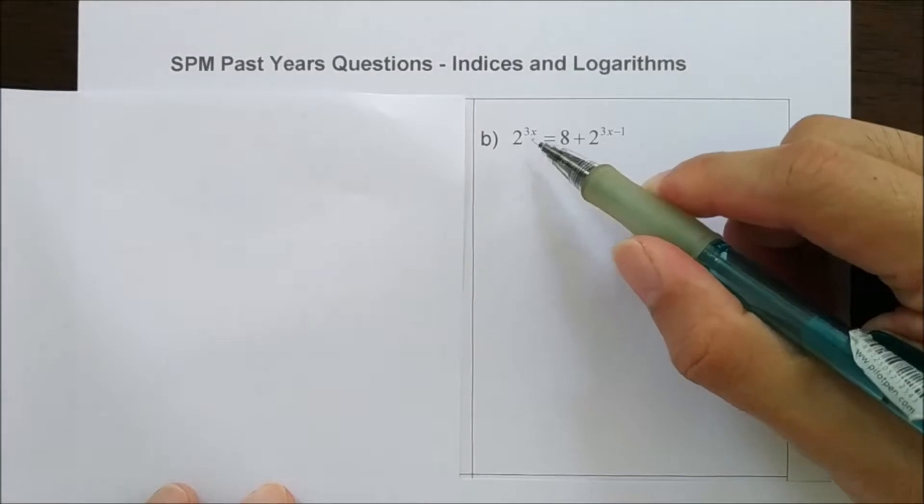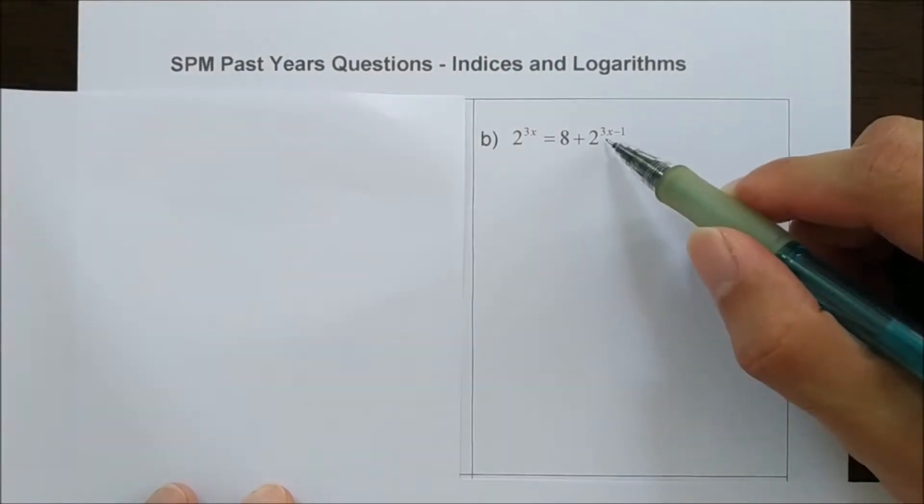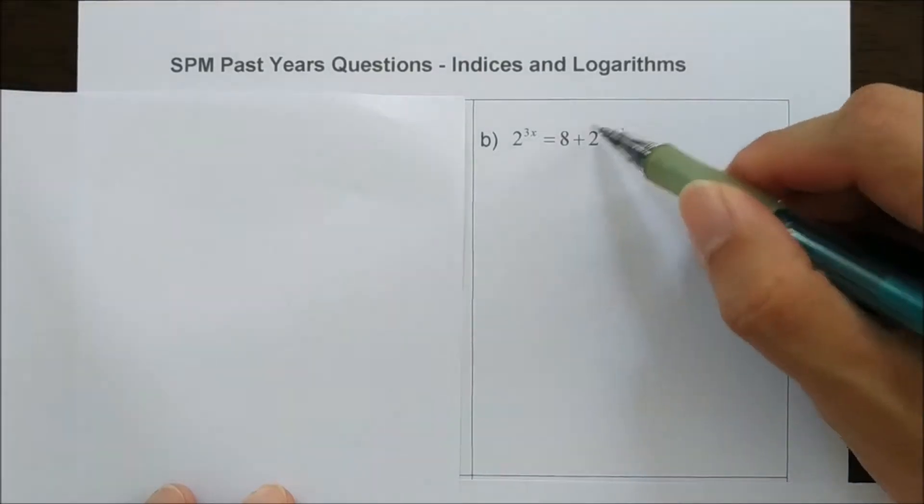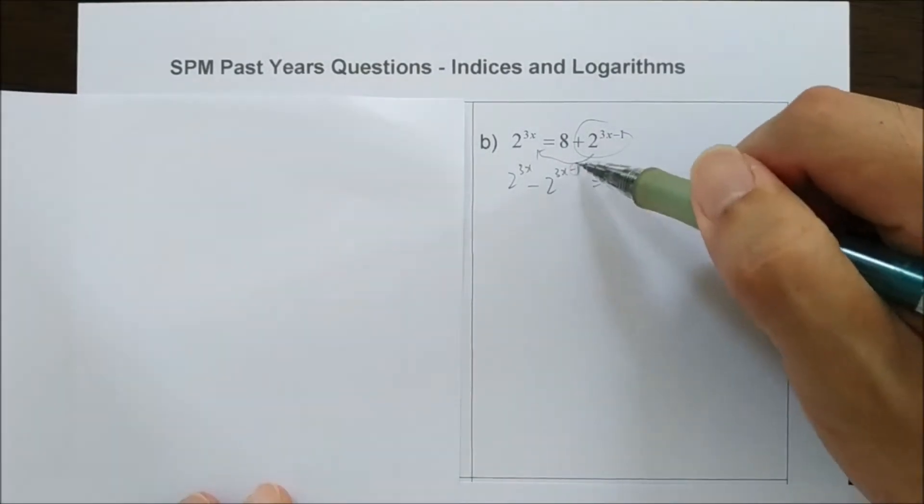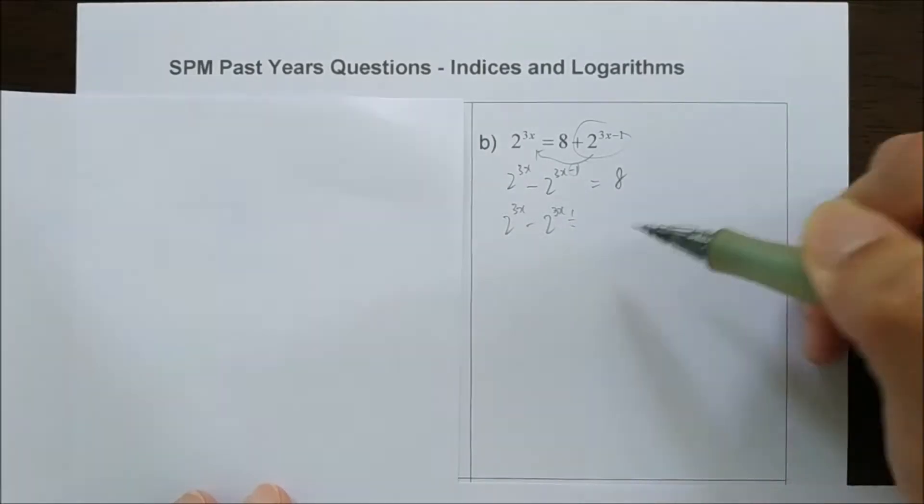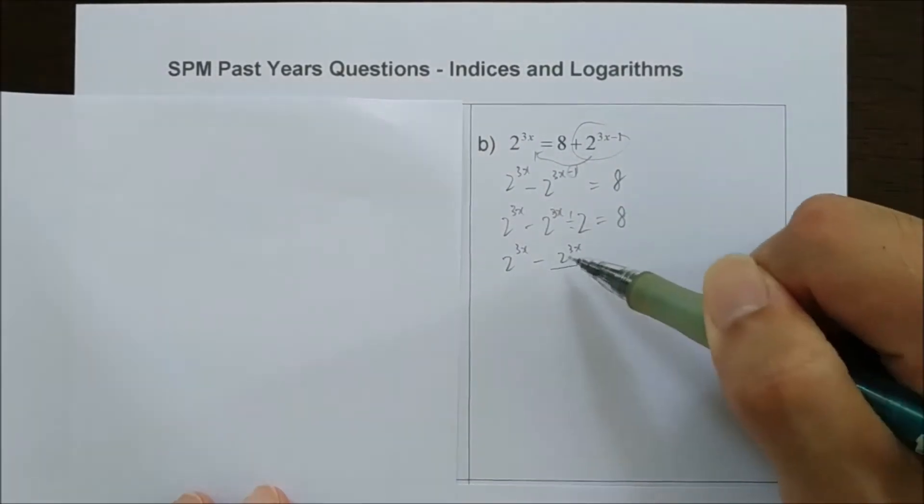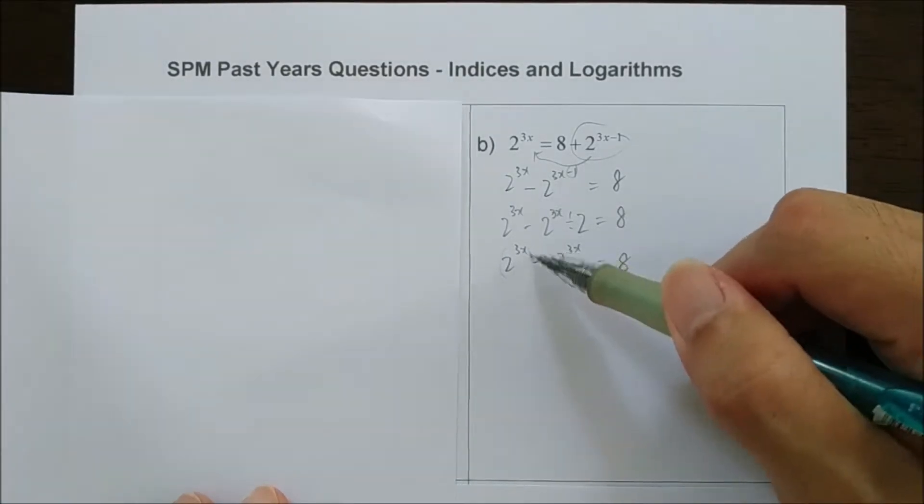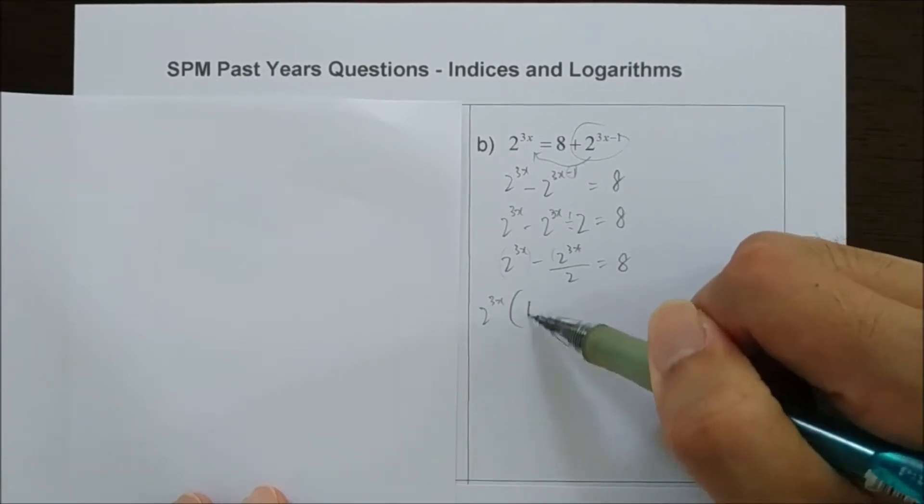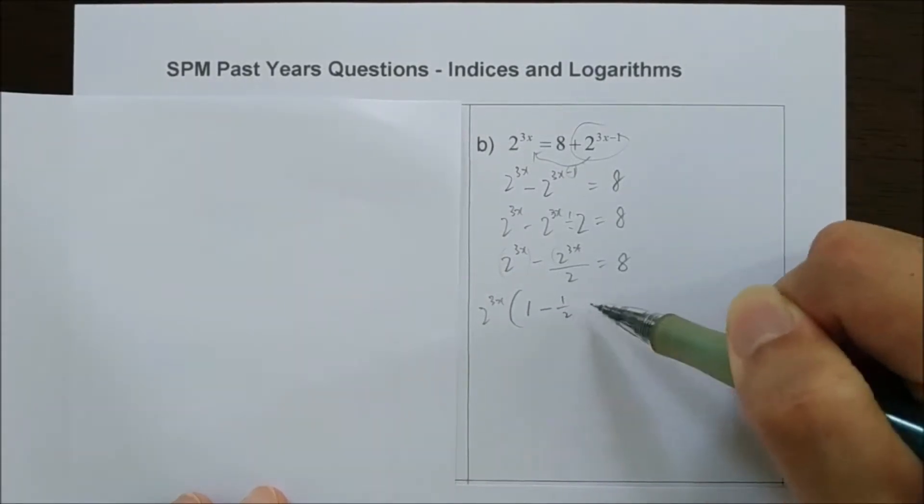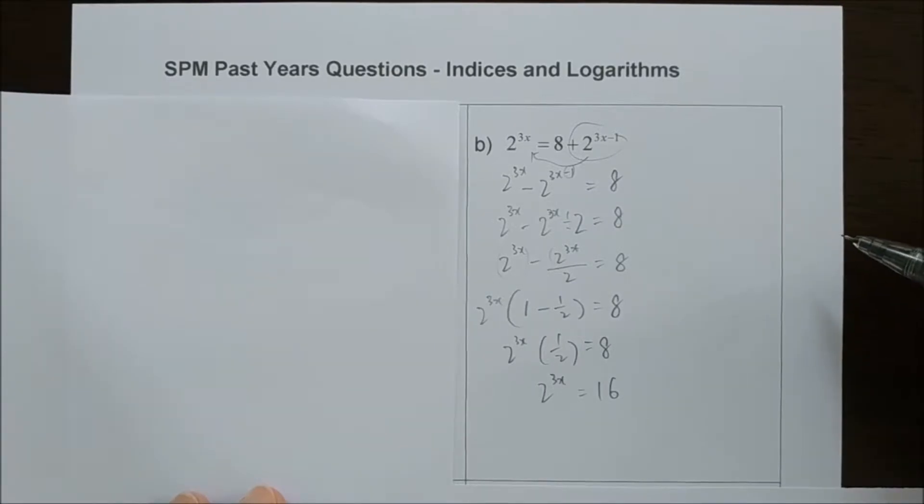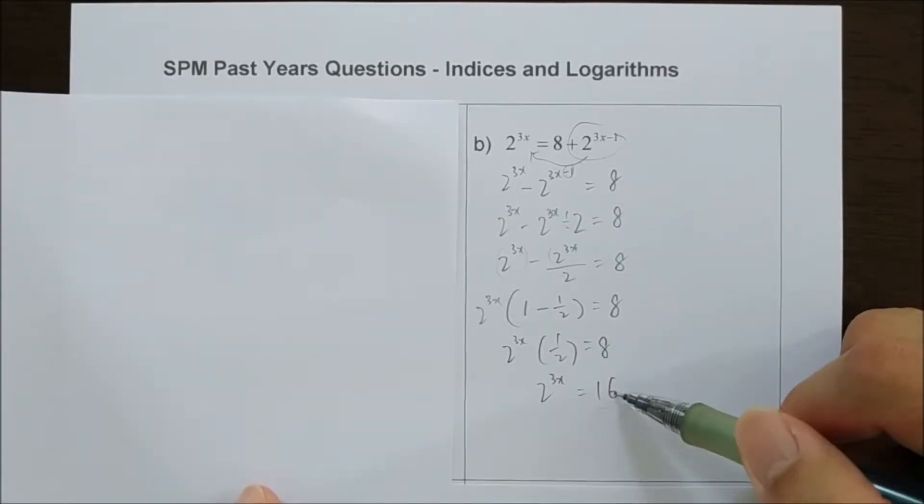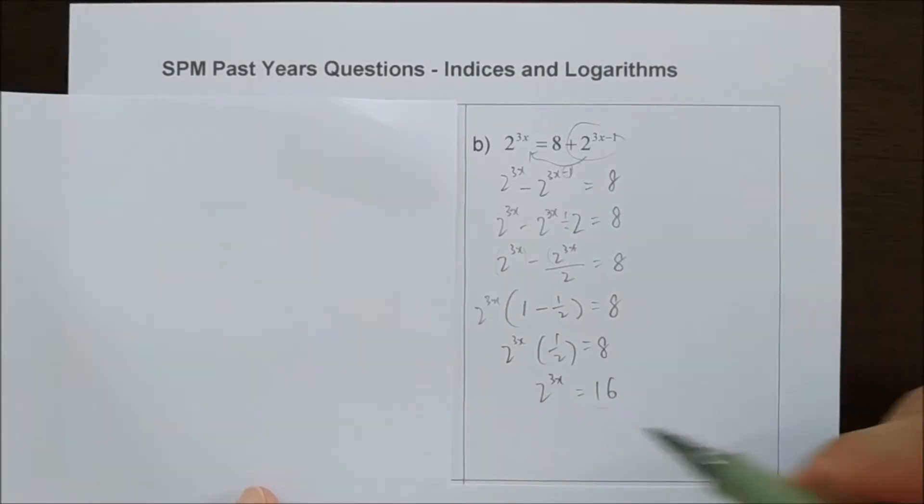Question B, 2 to the power of 3x equals 8 plus 2 to the power of 3x minus 1. As question A, we try to gather this, then we factorize this. Get 1 minus this is 1 over 2 equals 8. And since we are looking for x, we try to change the number here, the base is 2 to the power of certain values.